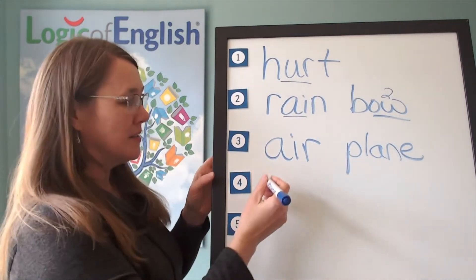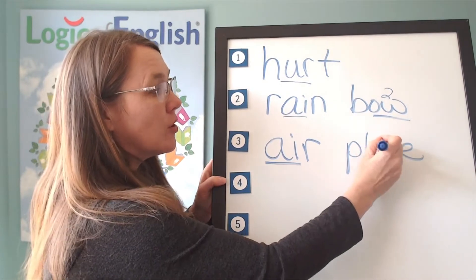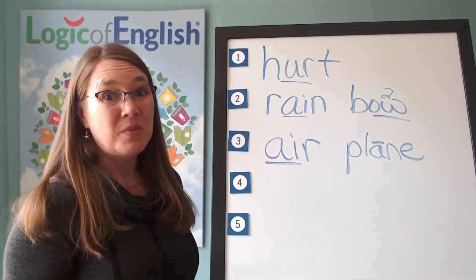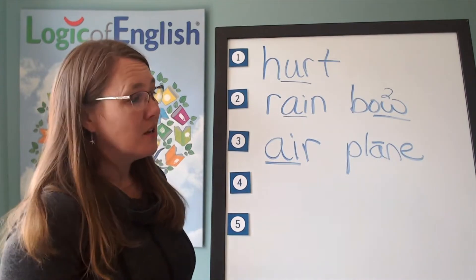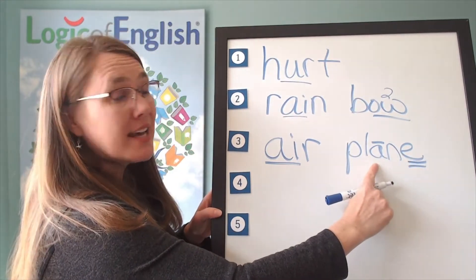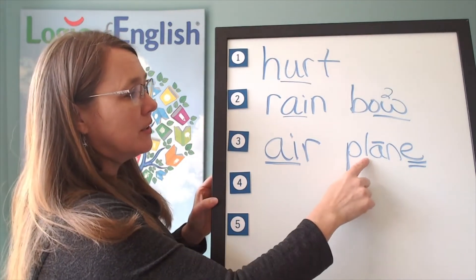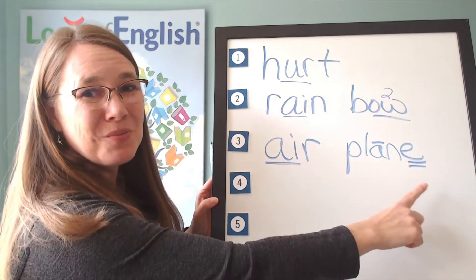All right. How will we mark airplane? We'll draw a line under the A and we'll put a line over this A. Why? Because it's saying it's long sound. Why is it saying it's long sound? The vowel says it's long sound because of the E. Let's read it. A, er, P, L, A, N. Airplane.